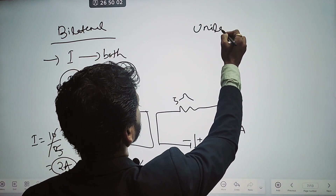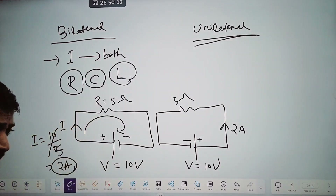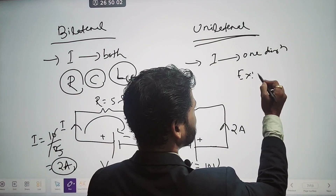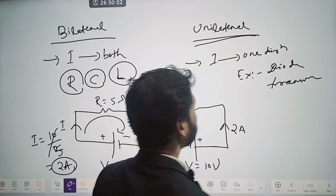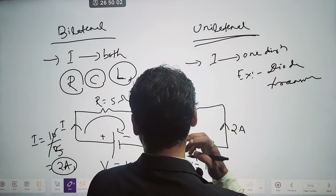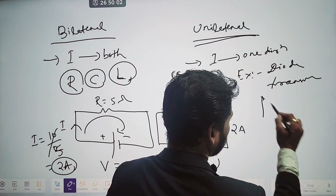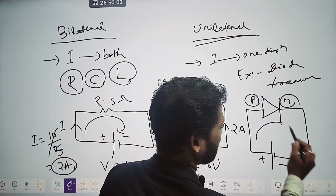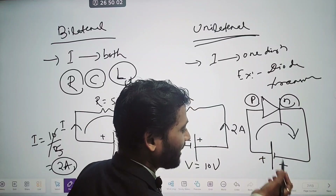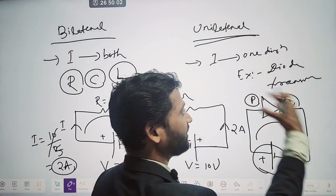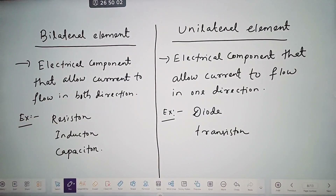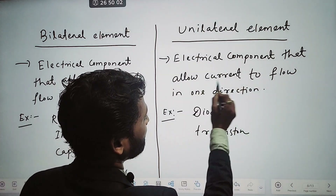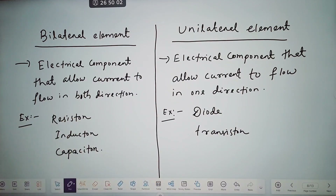In case of a unilateral element, current can flow in only one direction. Examples are diode, transistor, and all semiconductor devices — these are under unilateral categories. In the case of a diode, when the anode terminal is forward biased, current flows in a clockwise direction. But if we change the polarity, the conduction current becomes zero. So current can flow only in a particular direction in a unilateral element. Example is diode and transistor; for bilateral, examples are resistor, inductor, and capacitor.